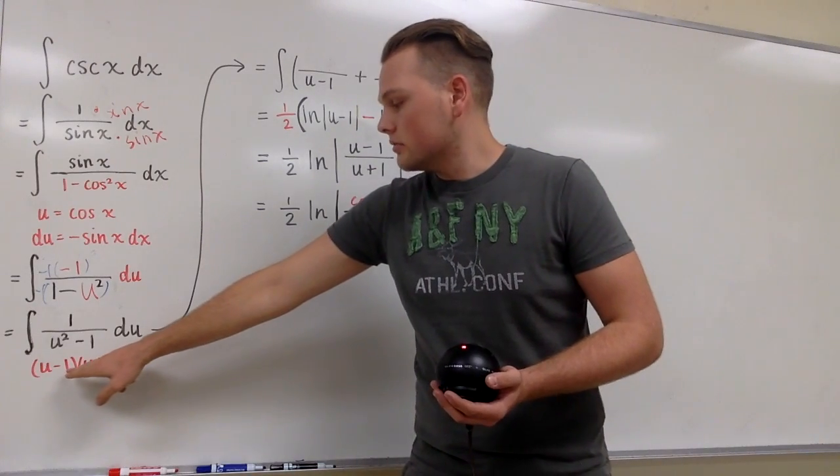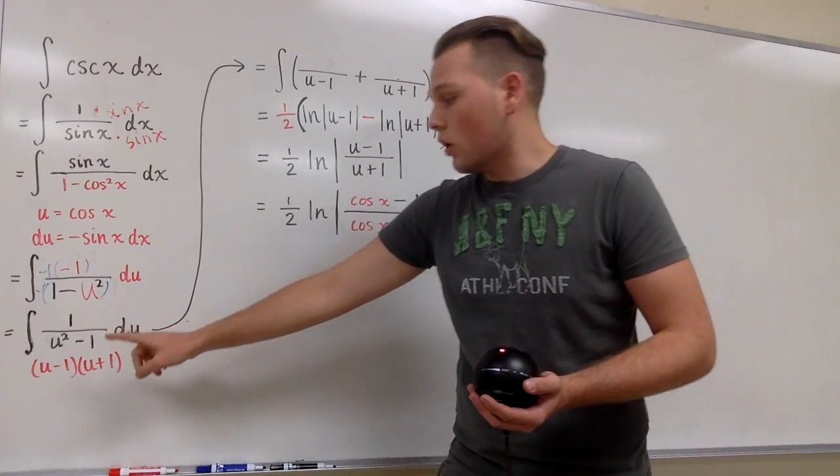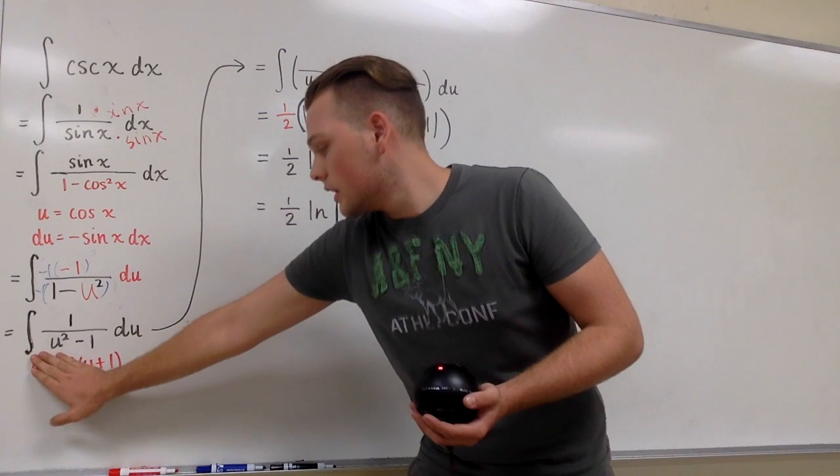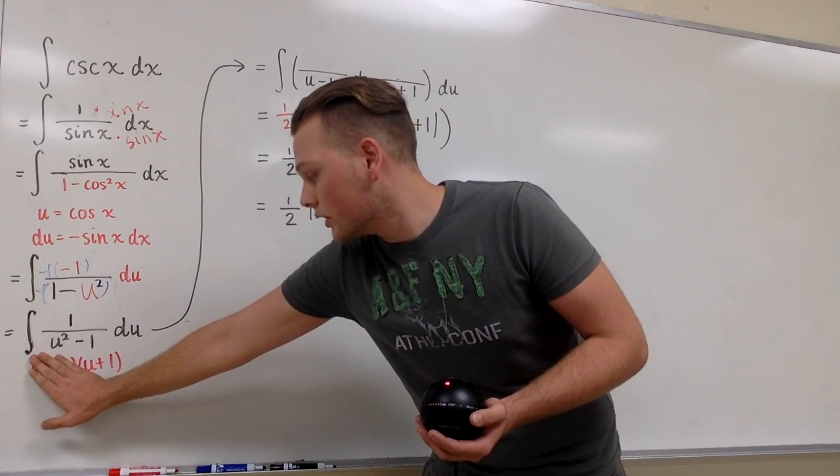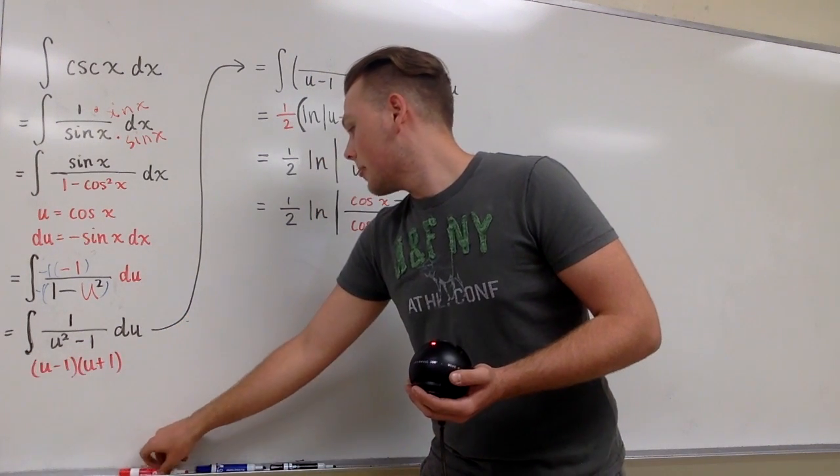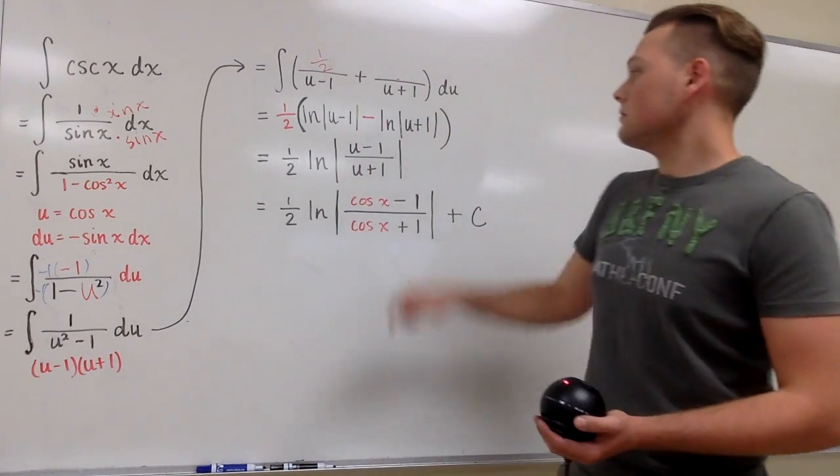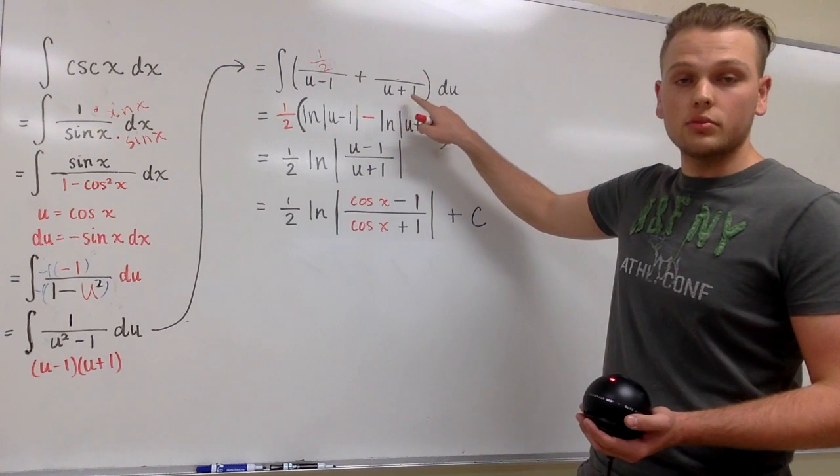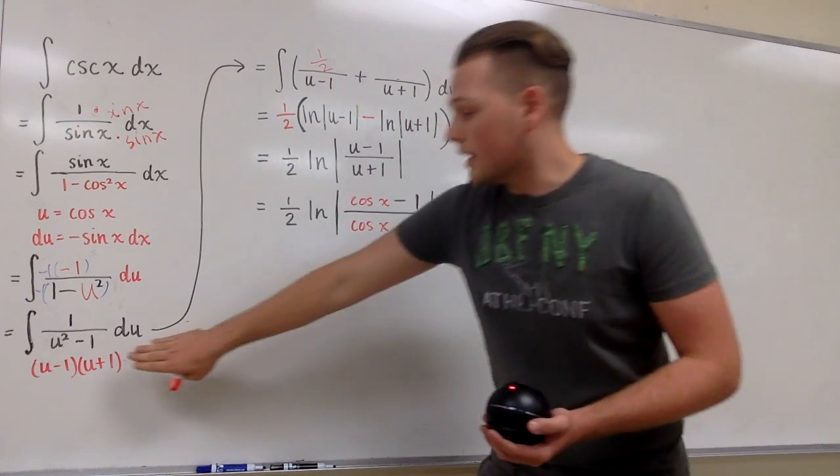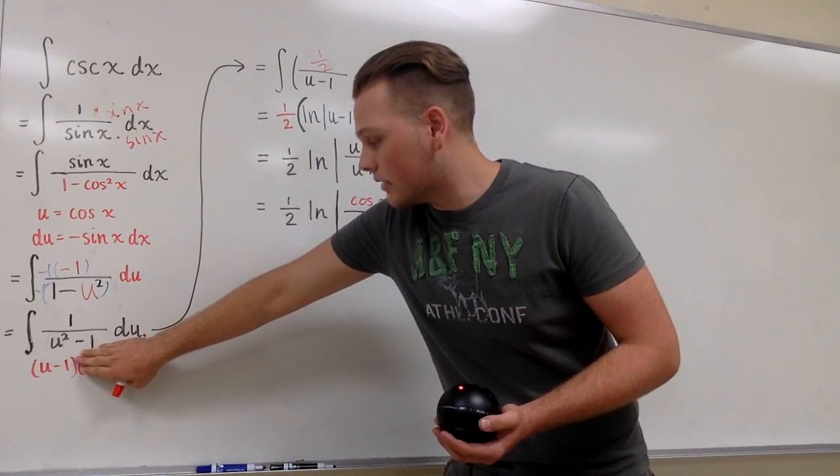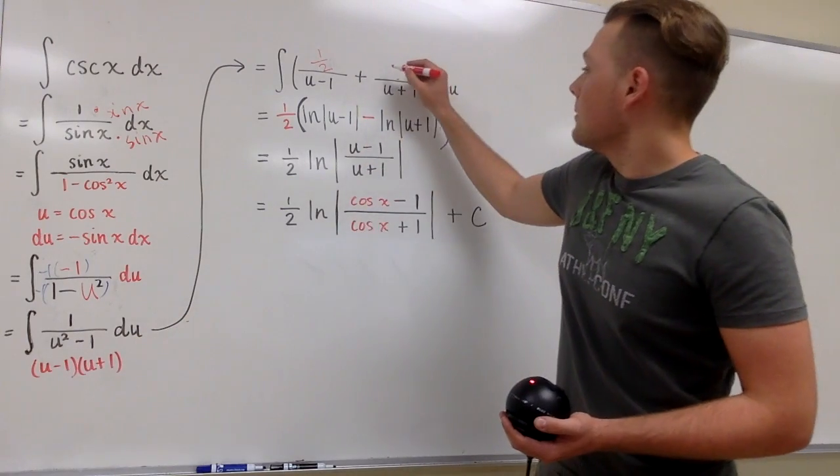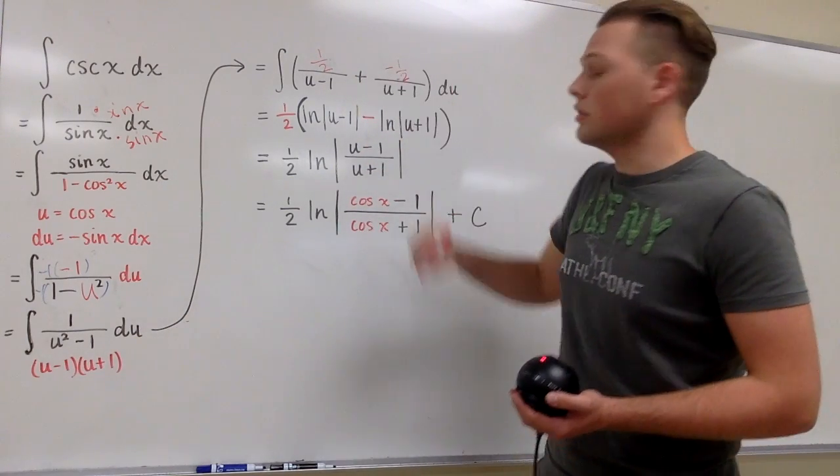For the u minus 1 we're going to plug in 1 so that becomes 0, cover it up and plug in 1 for u. By doing that we get 1 half for the numerator. Likewise, we're going to do the same thing for u plus 1 and plug in negative 1 to make that 0, cover it up, and we get negative 1 half for the numerator.